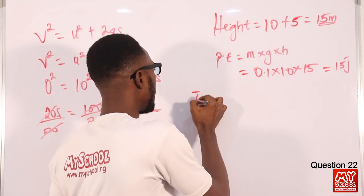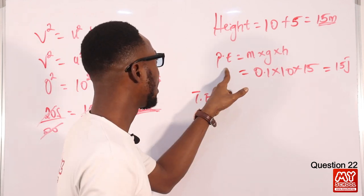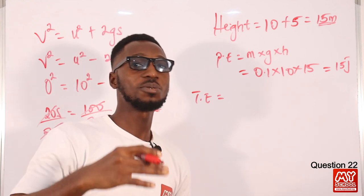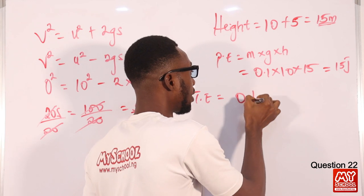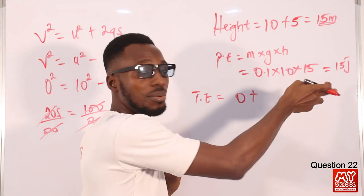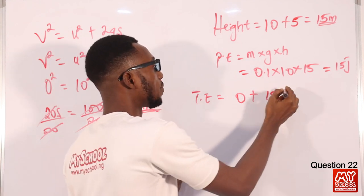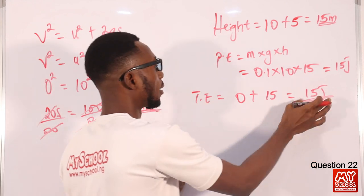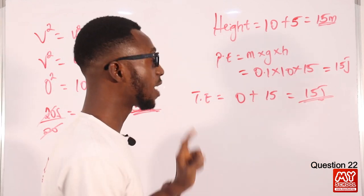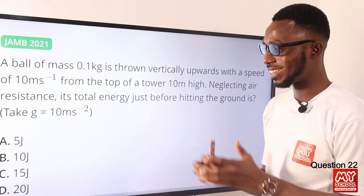Just before hitting the ground, the potential energy becomes zero and is converted to kinetic energy, so the total energy is 15 joules. Going back to the screen, option C is the valid option.